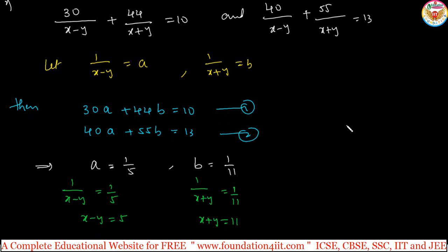Once you got again you can take the previous methods to find out x and y. x minus y is 5, x plus y is 11. By elimination method directly, plus y minus y cancel, 2x is 16, x equals 16 divided by 2, x equals 8.